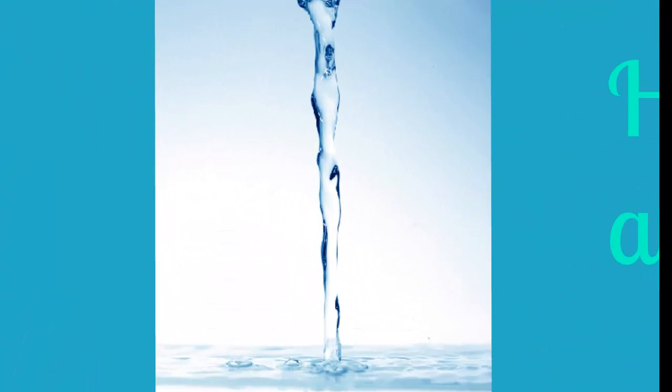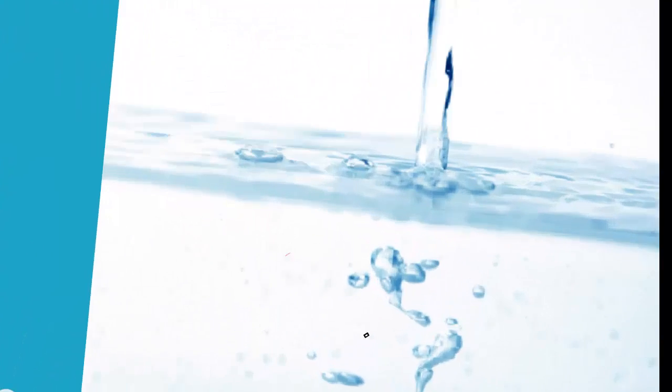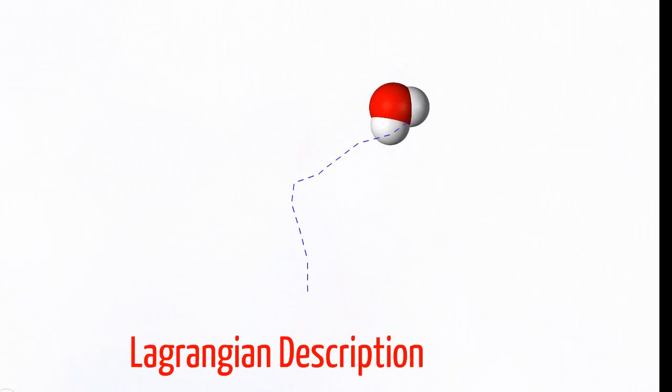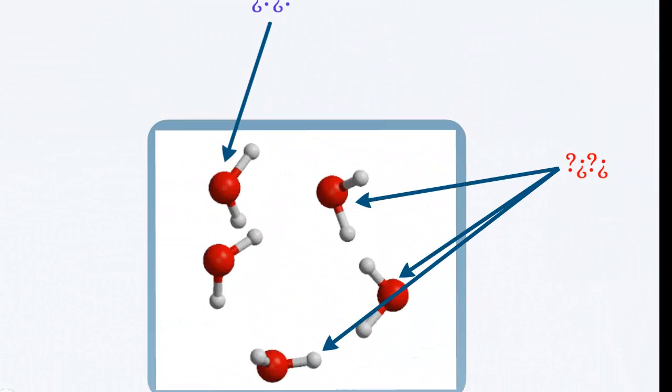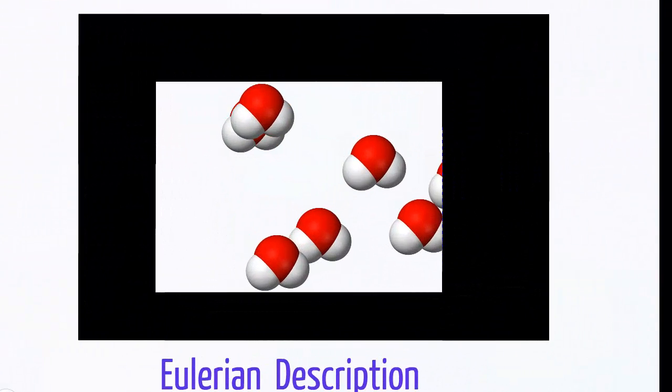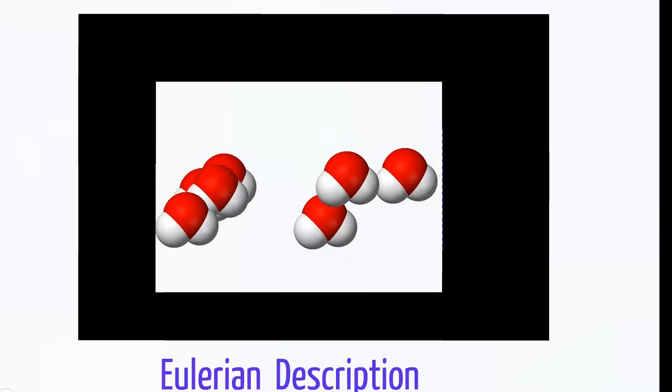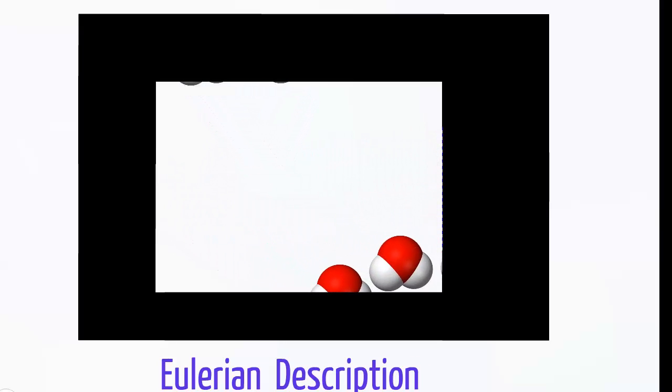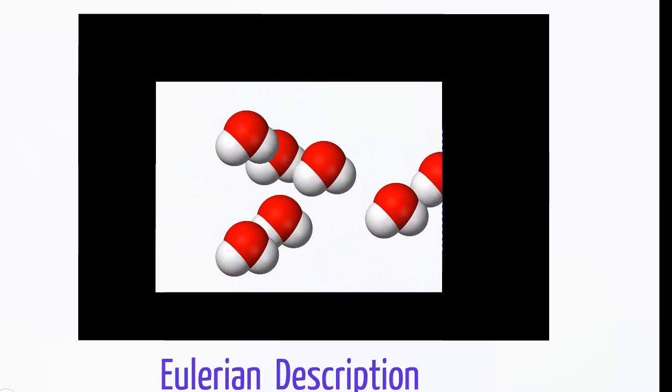So, what can we do? Do we observe each molecule individually and follow what happens to them like a paparazzi would do? How many molecules do we have to observe to measure the properties? One? A few? A billion? Do we watch a particular place and see how properties of the different particles change, as if we were looking through a rear window?